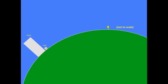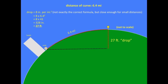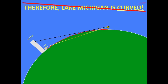Let's consider another model. Instead of the flat lake model, let's use the generally accepted model of a round-ish earth with a radius of 3,959 miles. This figure tells us there will be an apparent drop of eight inches per mile squared over the curve. With the curve measuring 6.4 miles, that gives us a 27-foot drop — more than enough to conceal the rocks behind the water of the lake. Even accounting for camera height above the ground, that still gives us more than enough to make the rocks invisible. Therefore, Lake Michigan is curved!